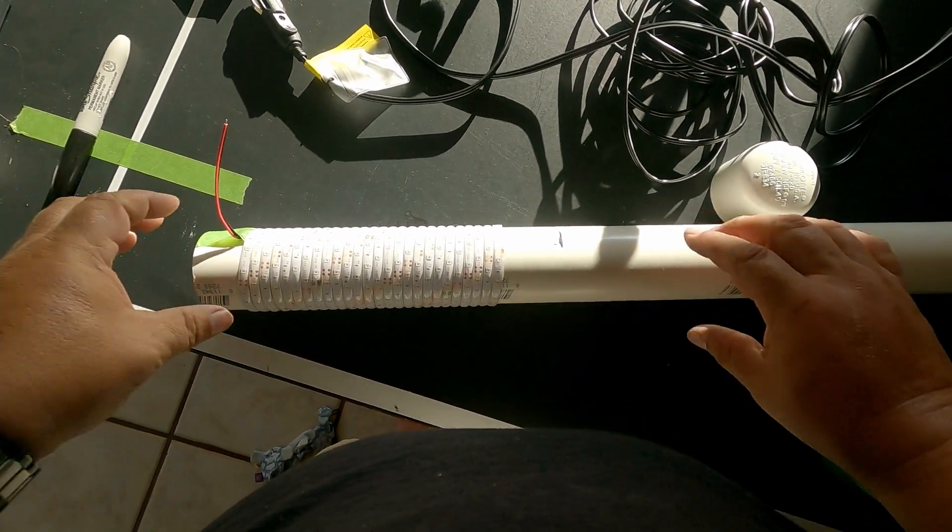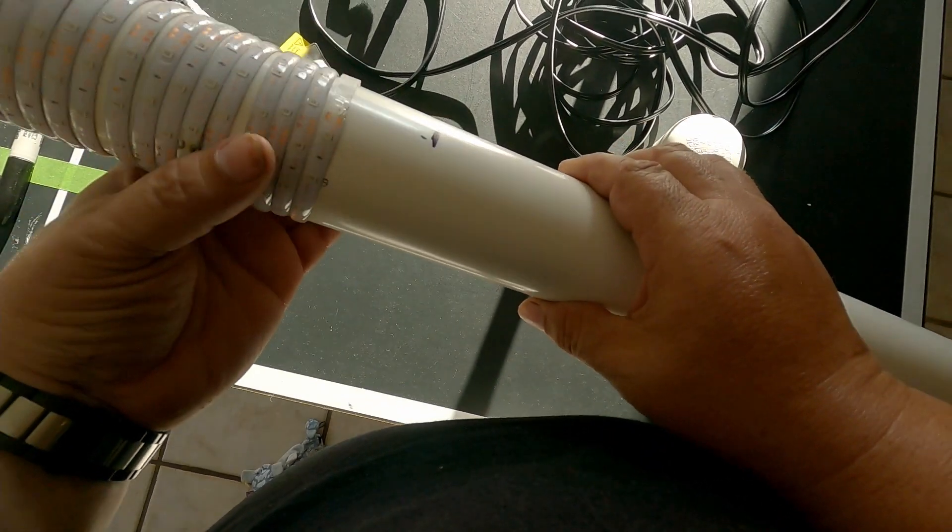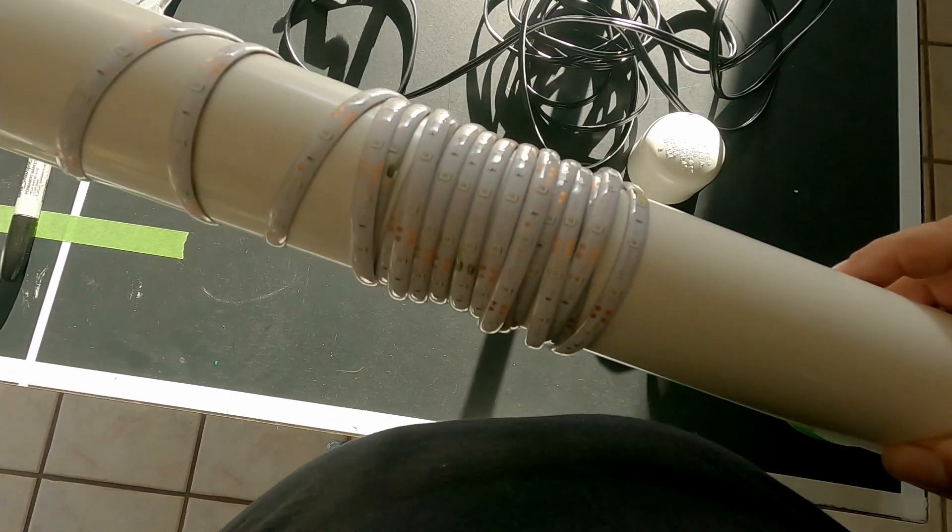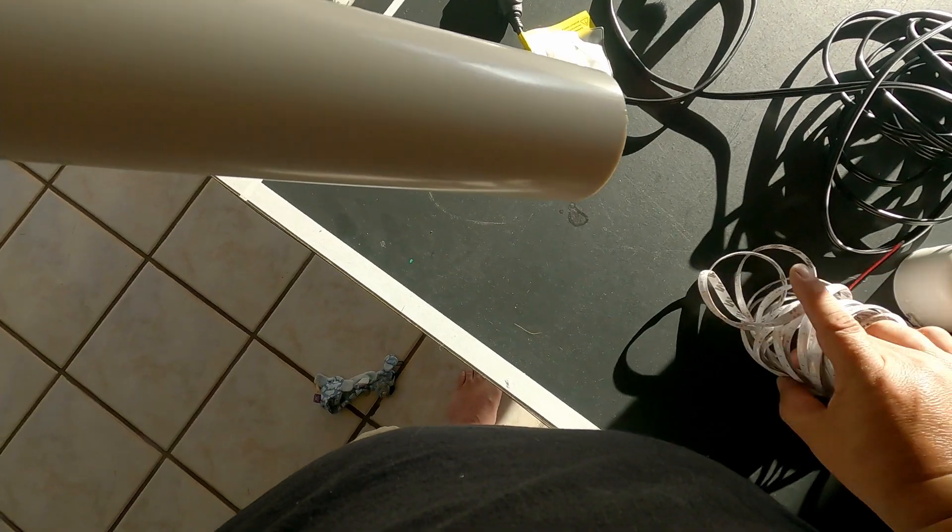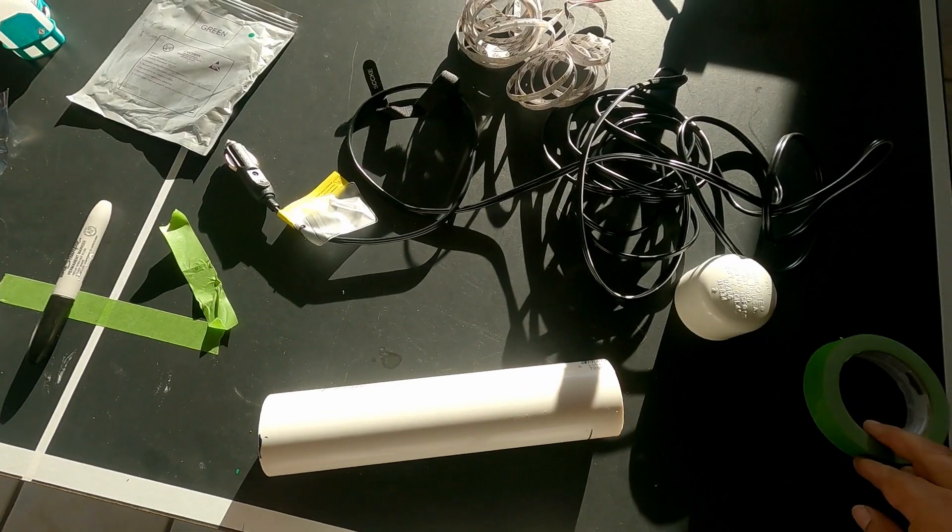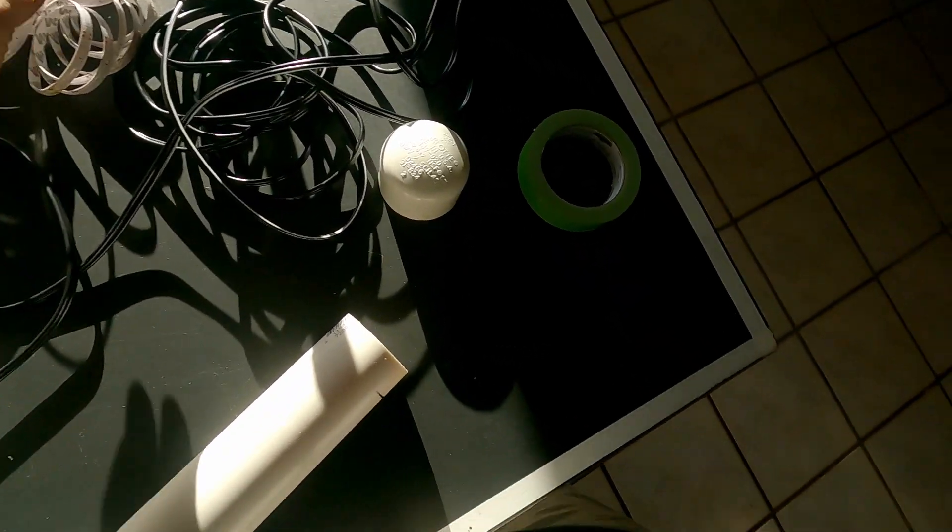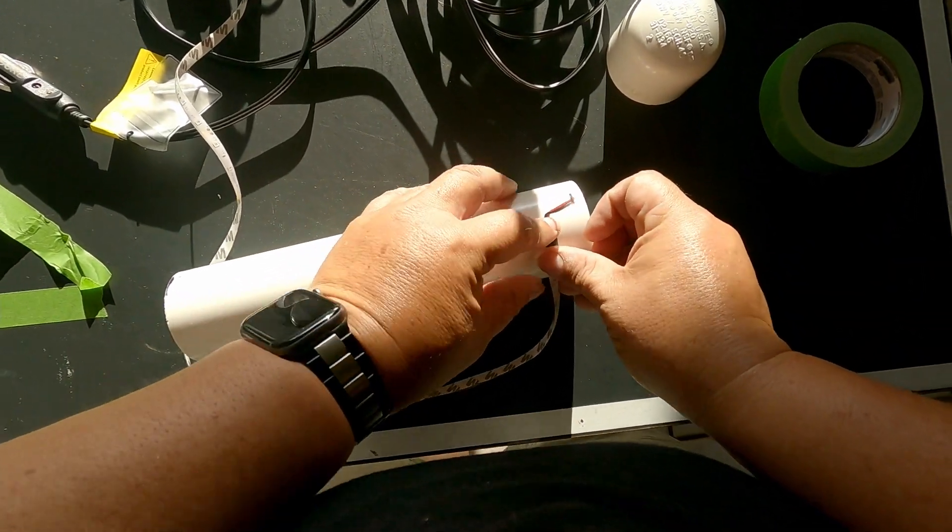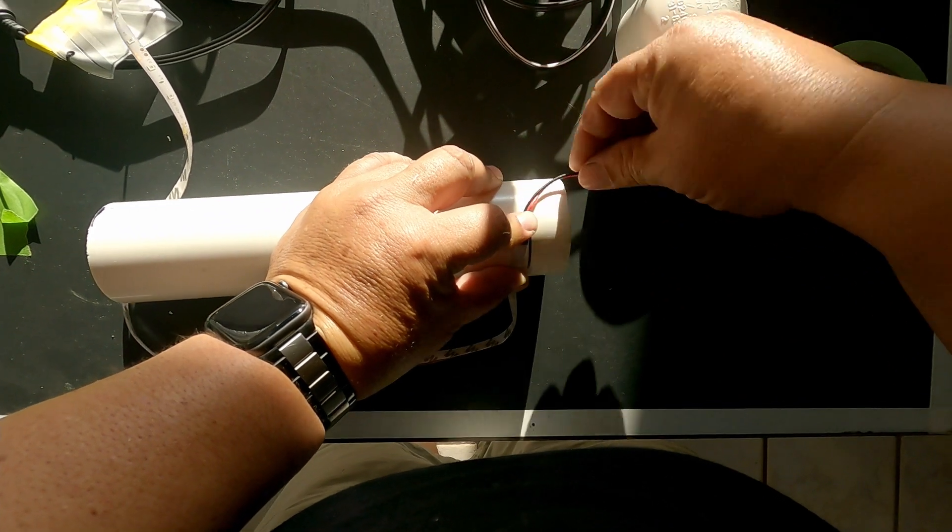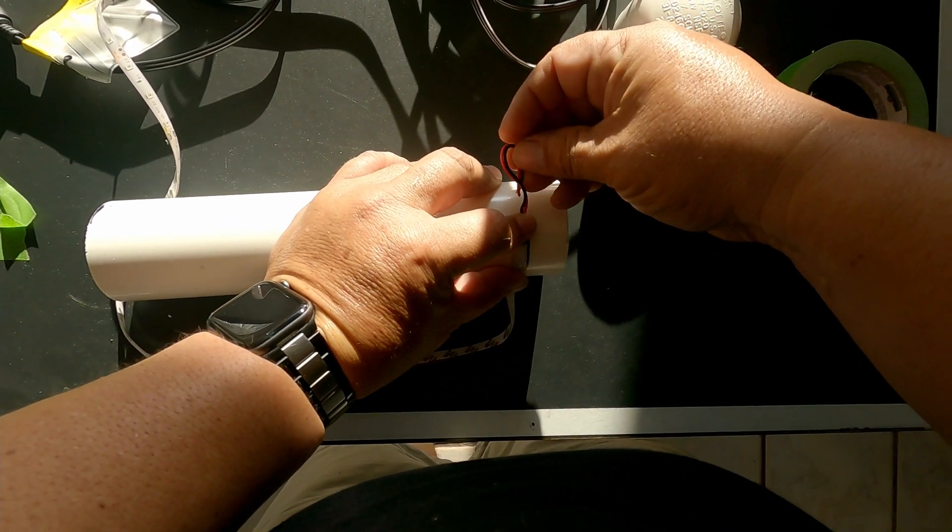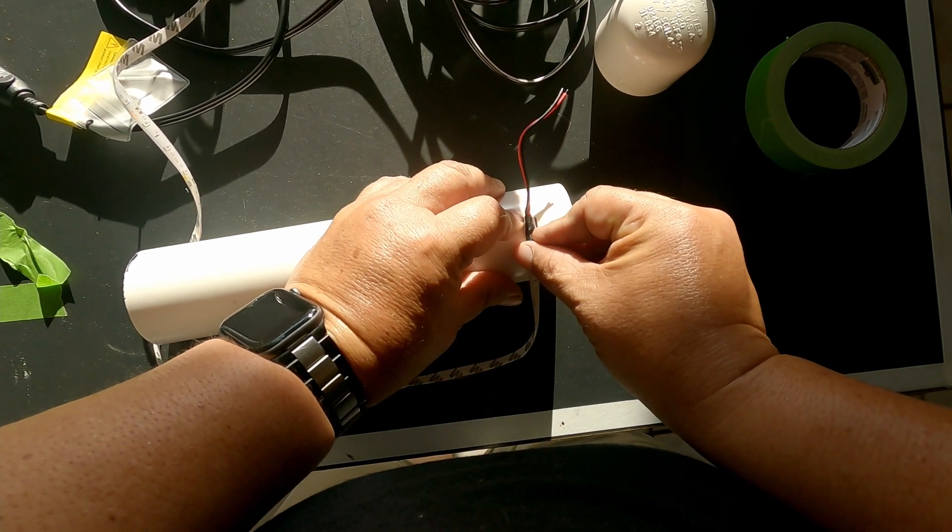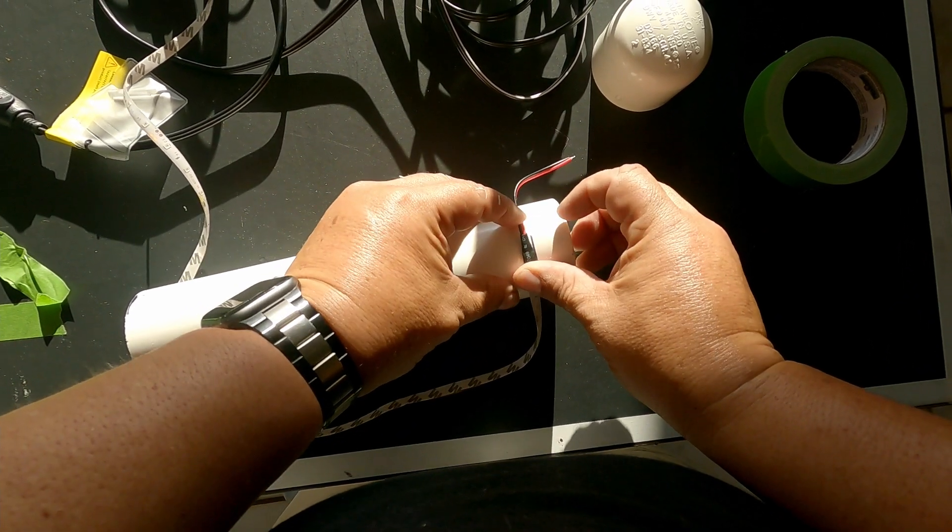And then what I'm also going to do before I go putting the lights on, I'm going to rough up the PVC with some sandpaper to help make it stick. Okay, let's see. I need to make a hole in the PVC somewhere around right in here to put these wires in.